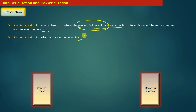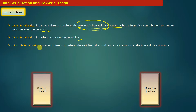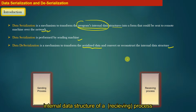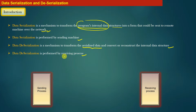Similarly, data deserialization is actually the opposite of data serialization. Data deserialization is a mechanism to transform the serialized data and reconstruct the internal data structures of a process. Data deserialization is performed by the receiving process, which is receiving the serialized data from the sending machine. It converts this serialized data into the program's internal data structures.